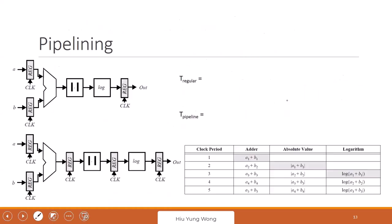If no question, then let's move forward. So how can we increase the speed of the clock, of the calculation? We can use so-called pipelining.